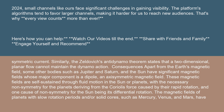Consequences: apart from the Earth's magnetic field, some other bodies such as Jupiter and Saturn, and the Sun have significant magnetic fields whose major component is a dipole — an axisymmetric magnetic field. These magnetic fields are self-sustained through fluid motion in the Sun or planets, with the necessary non-symmetry for the planets deriving from the Coriolis force caused by their rapid rotation, and one cause of non-symmetry for the Sun being its differential rotation.